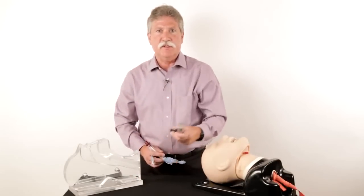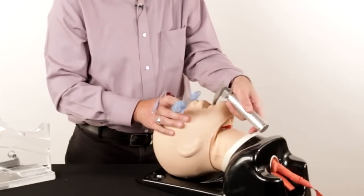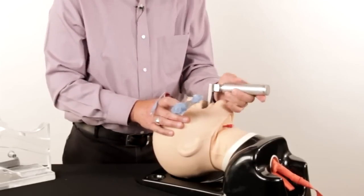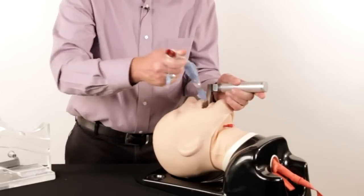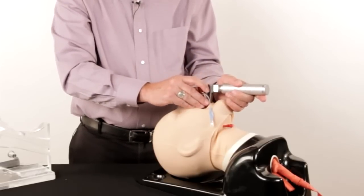Clearly, if you are using this as a backup intubation, it's very easy to insert if you can use a laryngoscope. Again, you are controlling the tongue. And again, one smooth motion, inserting it in place.